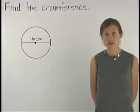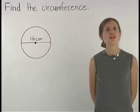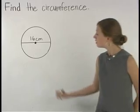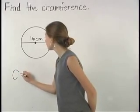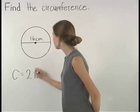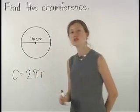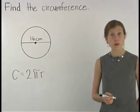To find the circumference of the circles shown here, start with the formula. Circumference equals 2 times pi times the radius, or C equals 2πr.